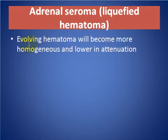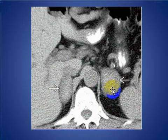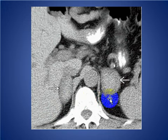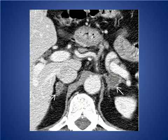Adrenal seroma: a liquefied evolving hematoma will become more homogeneous and lower in attenuation. Here we see a patient with bilateral adrenal seromas on non-contrast CT — heterogeneous high-attenuation masses in the adrenal glands due to adrenal hemorrhage. These evolved into water-density seromas in the same patient after 12 weeks.